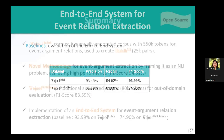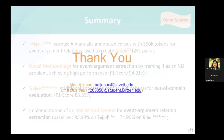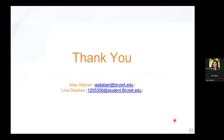In summary, we constructed the Wujud Hadath corpus, a manual and richly annotated corpus, and applied a novel methodology for event argument extraction by framing it as a natural language inference problem. We tested our model on the Wujud out-of-domain corpus and implemented an end-to-end system for event argument relation extraction. All resources and models are open source and available on our website. Thank you for your attention — if you have any questions, feel free to reach out.